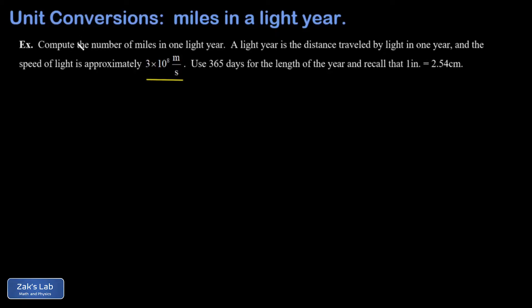The first thing we have to do is go from a speed to a distance, and we're really just using distance equals rate times time here. So our distance is 3 times 10 to the 8th meters per second multiplied by one year. Now we can start dealing with the unit analysis.